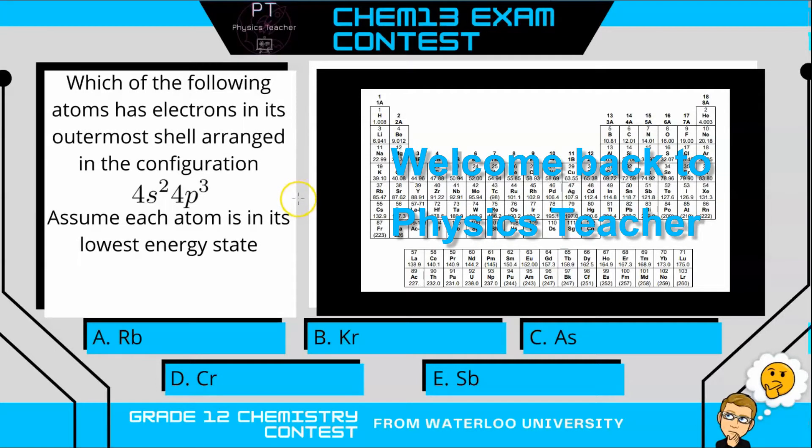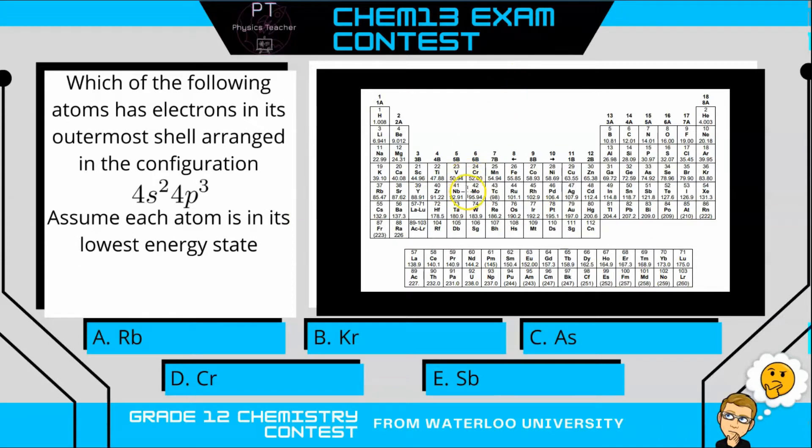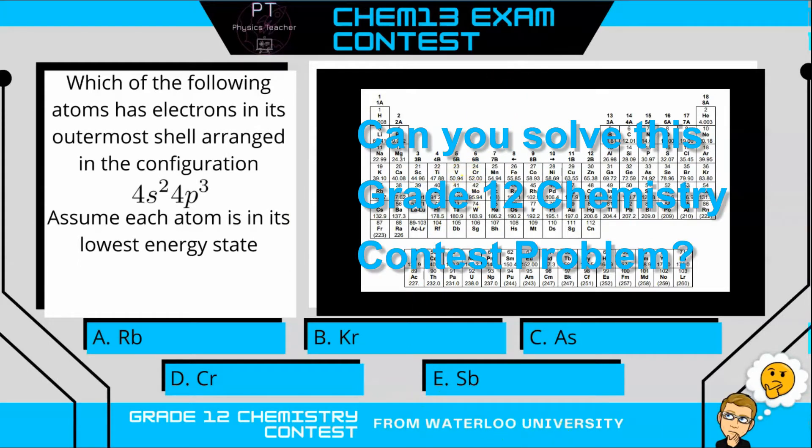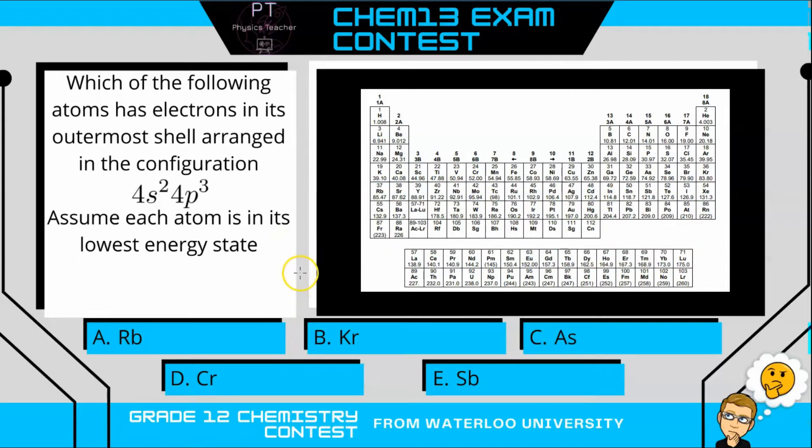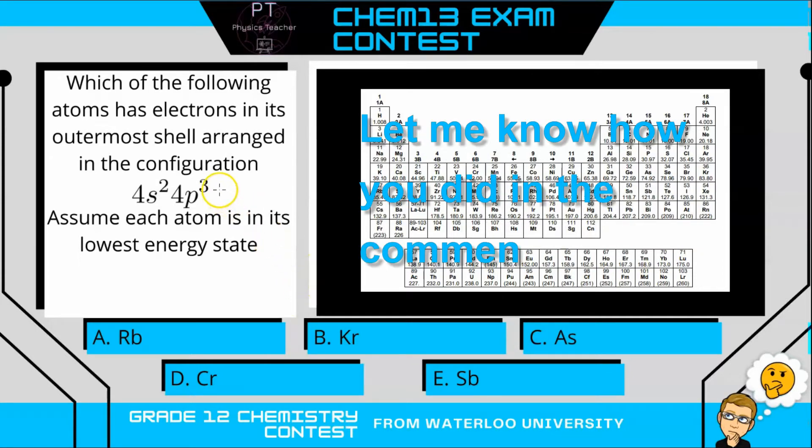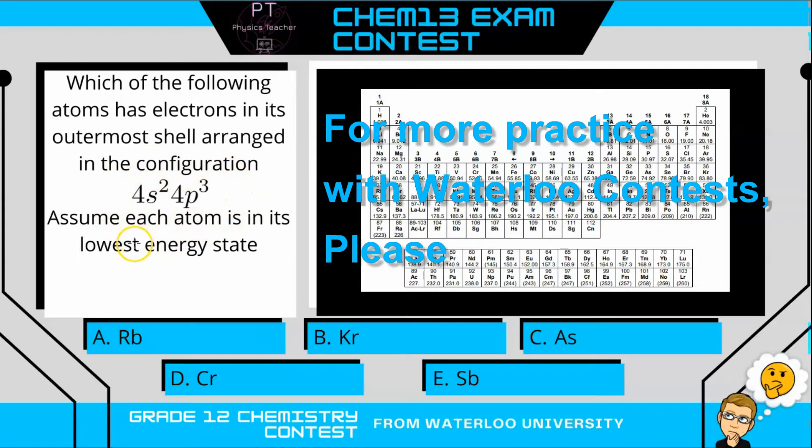Hi, welcome back to Physics Teacher. This is a question from the CHEM13 exam, which is a contest from Waterloo University for Grade 12 Chemistry. For this question, I'm going to show you how to use the periodic table to determine which element has this electron configuration in its ground state. Give it a try, and I'll be right back with the solution.